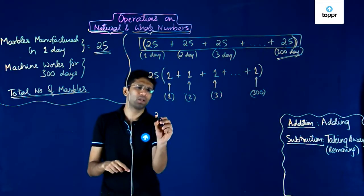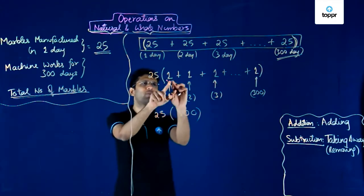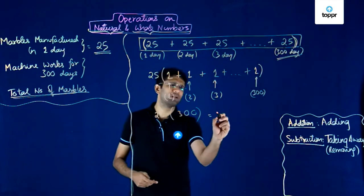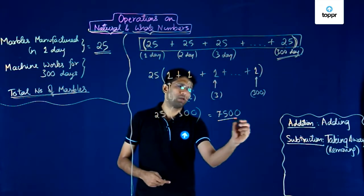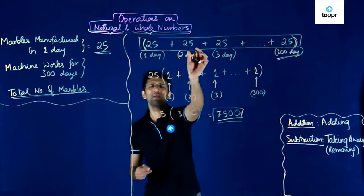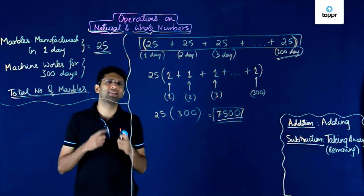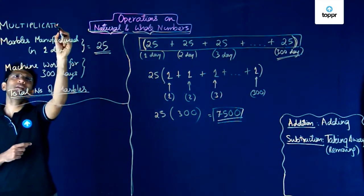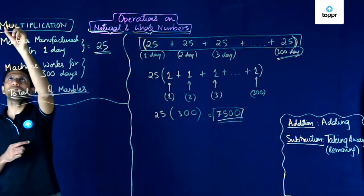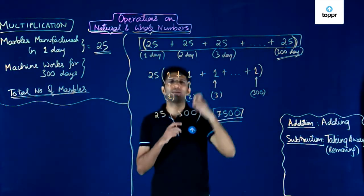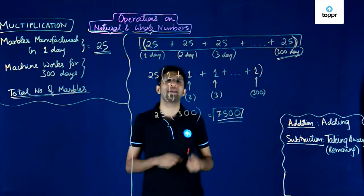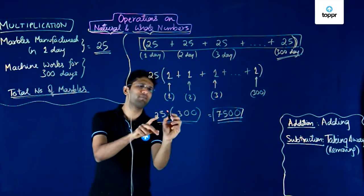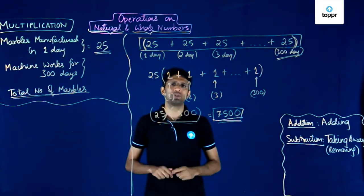So we can now write this as 25 multiplied by 300, because we added 1 three hundred times and got 300. This gives us the answer 7500. Now we have seen that whenever we want to add the same number again and again, we can replace it with a more efficient operation — and that operation is called multiplication. Multiplication is nothing but repeated addition of the same number. Here, 25 was repeatedly added, so we wrote 25 multiplied by 300, giving us 25 × 300 as the answer.